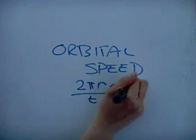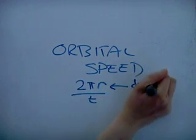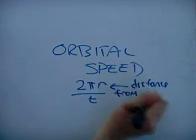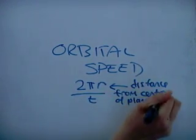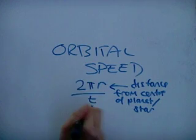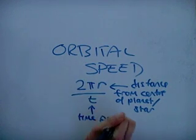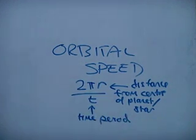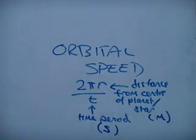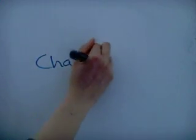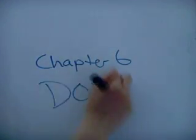To calculate the orbital speed, you use this equation: 2πr over T, where r is the distance from the center of a planet or star, and T is the time period. Chapter six done.